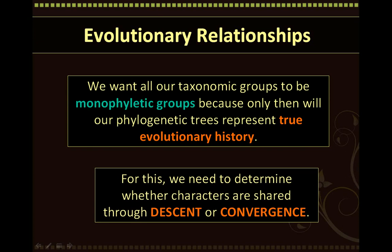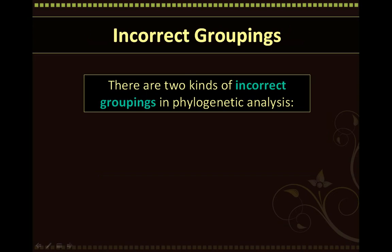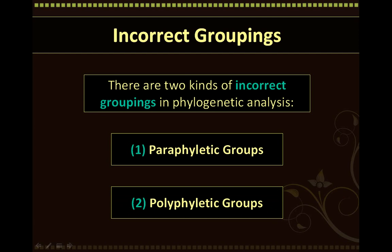We need to determine whether characters are shared through common descent or through evolutionary convergence. However, this can be really hard to determine, and thus mistakes can be made. There are actually two types of incorrect groupings or mistakes in phylogenetic analysis: the first type is paraphyletic groups, and the second type is polyphyletic groups. Let's discuss what each of these groupings are.